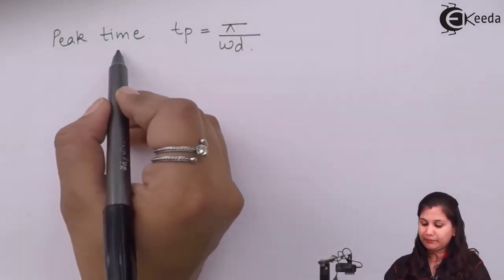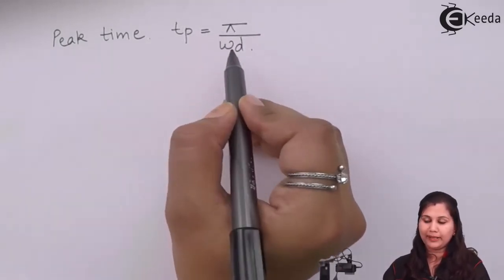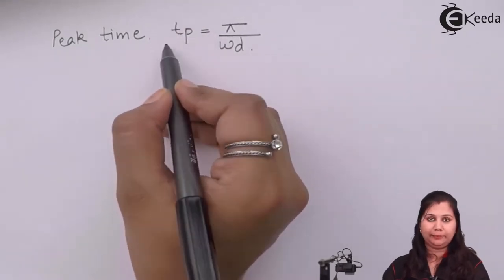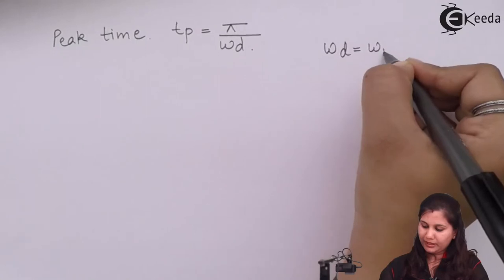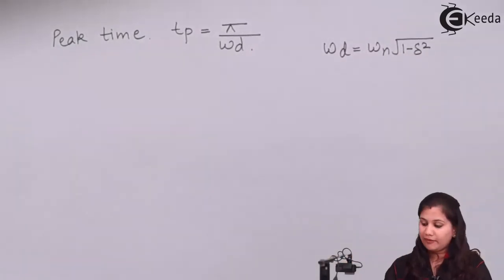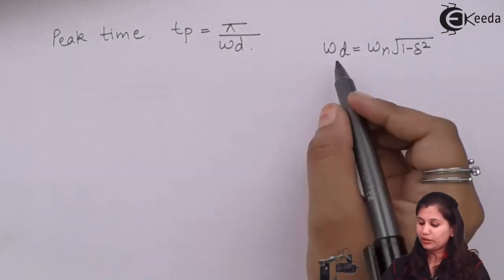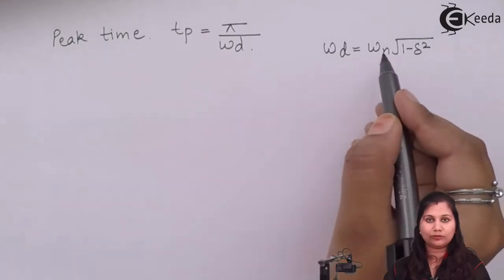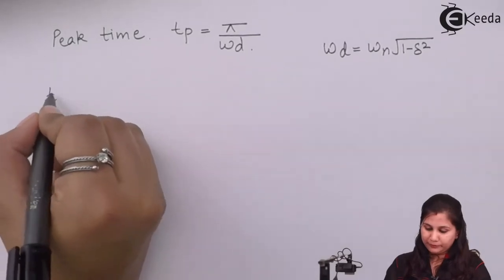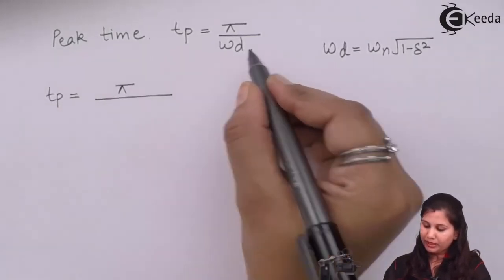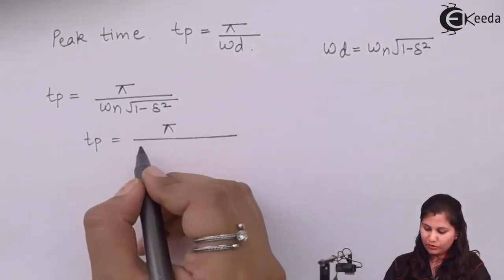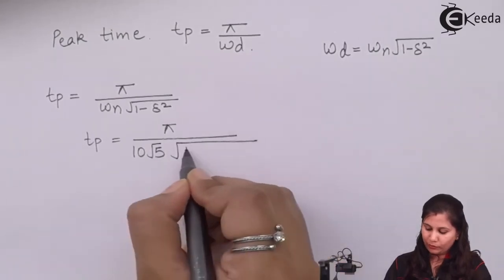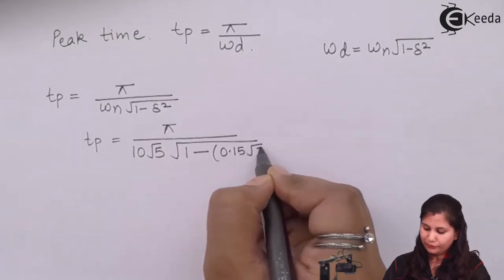The next specification is peak time, tp, which is given by the formula tp equals π upon ωd. The damped frequency ωd equals ωn times the square root of (1 minus δ²). We have already calculated ωn and δ, so we substitute: tp equals π upon [10√5 × √(1 minus (0.15√5)²)].